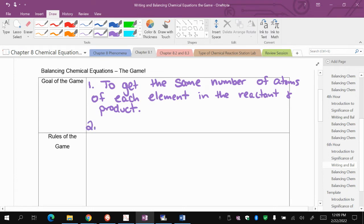The second goal is, we saw this in the significance of the chemical reaction, the mass of the reactants equals the mass of the product. So the second goal is to obey the law of conservation of mass.